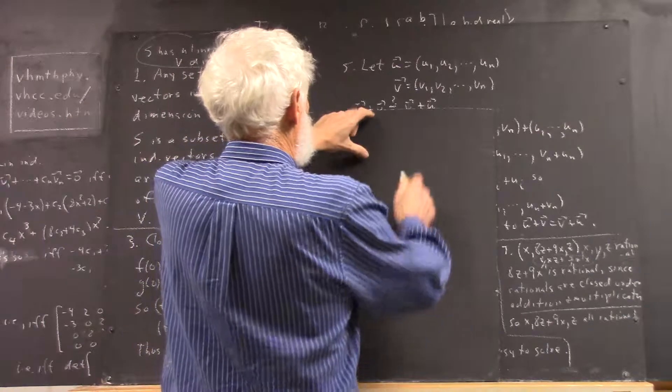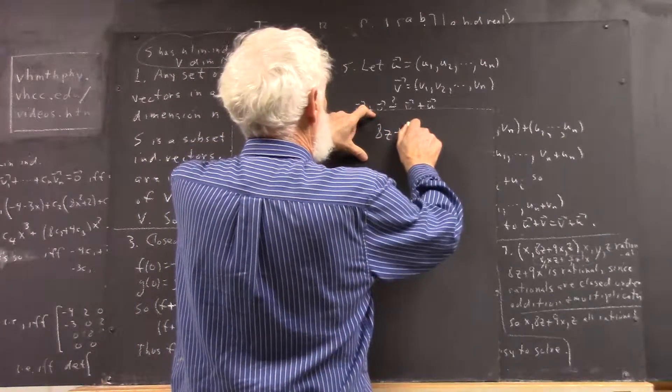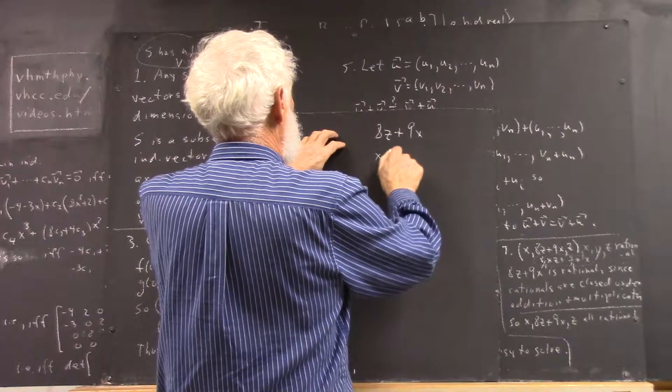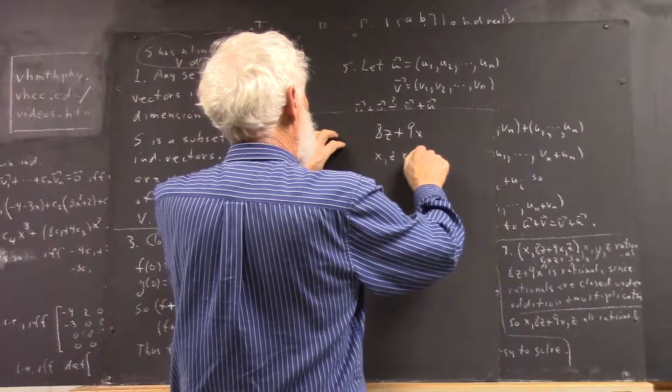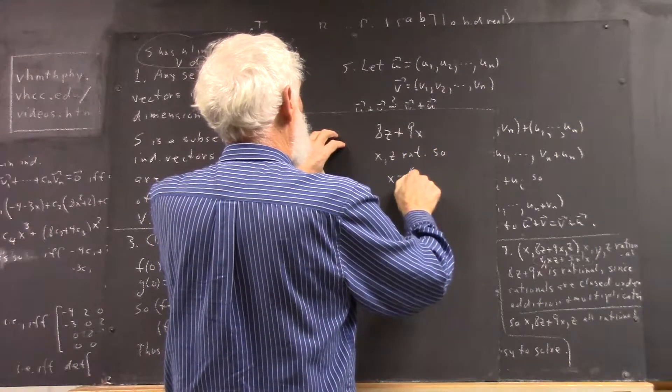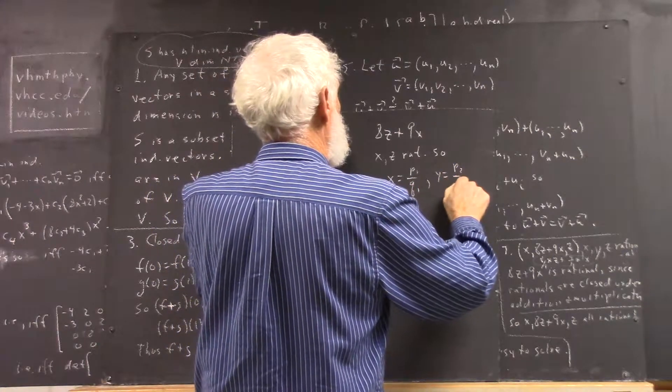Okay, but let's make sure we understand what this means. You've got 8z plus 9x. X and z are rational. So, x equals, let's say, p1 over q1, and z equals p2 over q2.